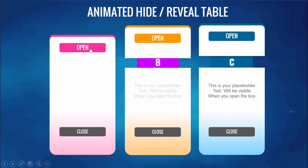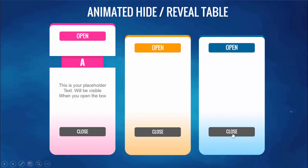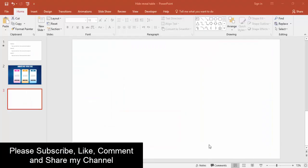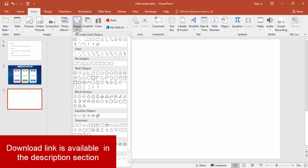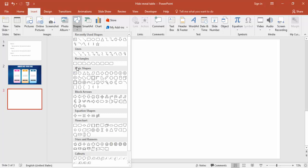Isn't it cool? So let's start how we can do this in PowerPoint — and believe me, it's very easy to do and you can really enjoy doing it. The first step is to create a new slide, go to the Insert tab, select Shape, and select the shape called 'Rectangle: Top Corners Rounded.'